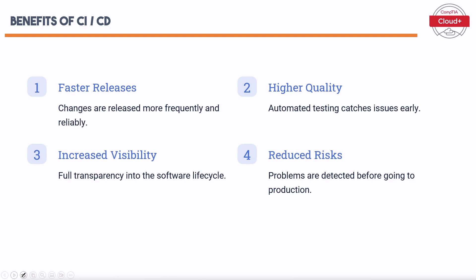The benefits of CI-CD include: Number one, Faster Releases — changes are released more frequently and reliably, reducing time to market and allowing for quicker response to user feedback. Number two, Higher Quality — automated testing catches issues early, significantly improving overall software quality. Number three, Increased Visibility — full transparency into the software lifecycle fosters better communication and collaboration. Number four, Reduced Risks — problems are detected before going to production, ensuring a more stable product.